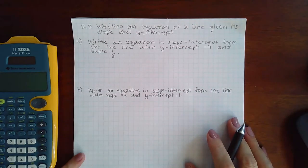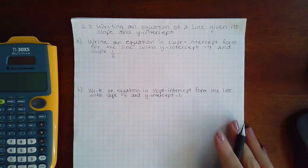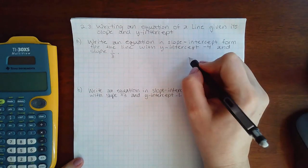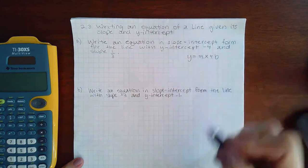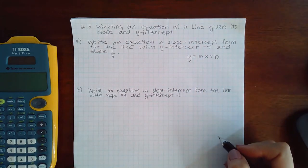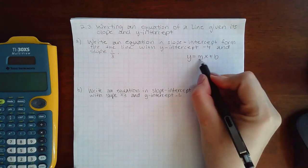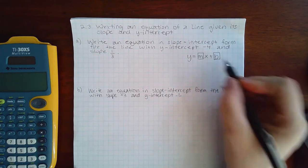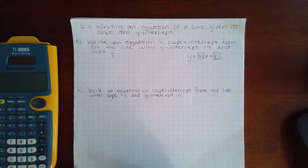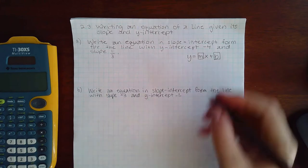Now we do need to know our slope-intercept form of a line. The slope-intercept form of a line looks like this: y equals mx plus b. As long as I can identify what the slope is and what b is, I can simply just plug those numbers into these specific places.